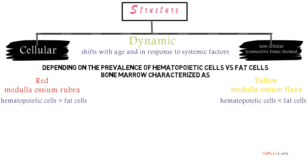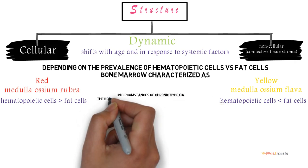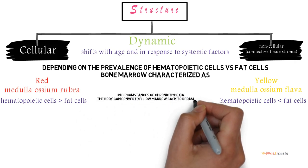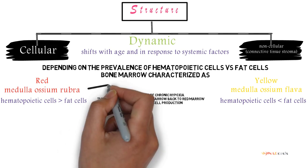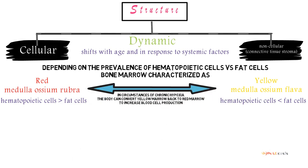Depending on the prevalence of the hematopoietic cells versus fat cells, the marrow is characterized as red or yellow marrow, or medulla osseum rubra or medulla osseum flava respectively. In circumstances of chronic hypoxia, the body can convert yellow marrow back to red marrow to increase blood cell production, as we can see in this lovely image.